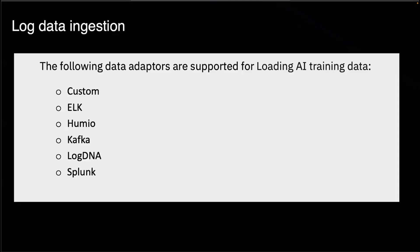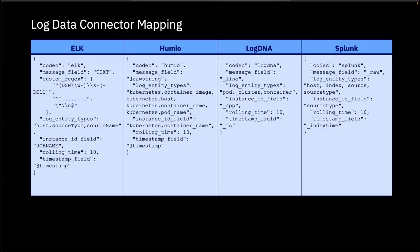Speaking of log sources, right now we support different log data ingestions, including customized connector, ELK, Humio, Kafka, LogDNA, and Splunk. The main benefit is that once you connect these sources in AIOps using these different connector mappings, users don't have to worry about which logs are coming from which source. AIOps can monitor all of these at the same time. SREs don't actually have to switch back and forth to different log managing tools — they can all be done in AIOps.